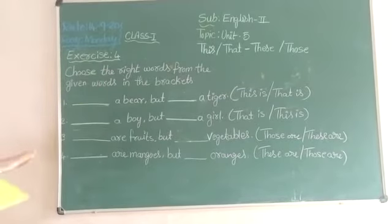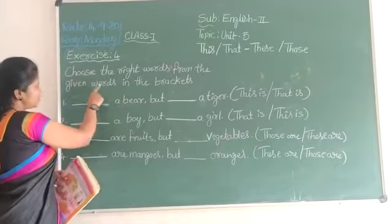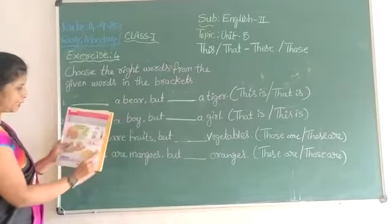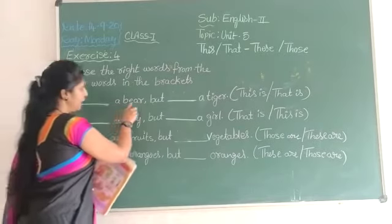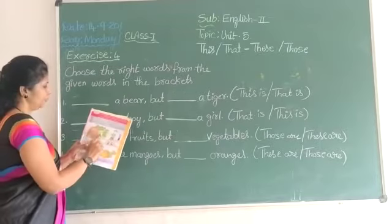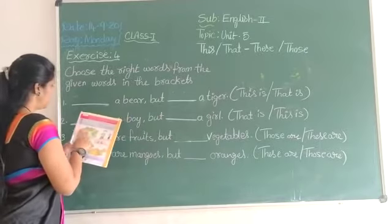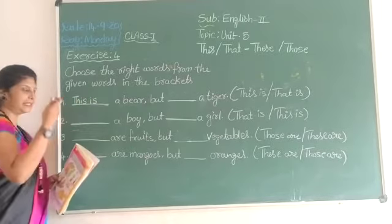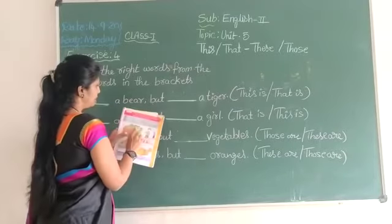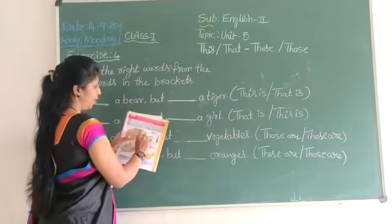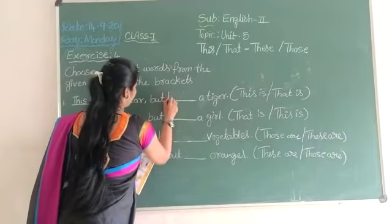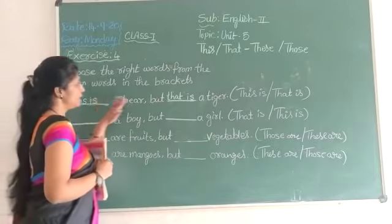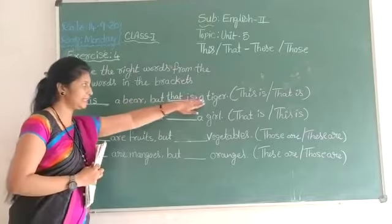Exercise 4. Choose the right words from the given words in the brackets. Look at the picture and you should write: blank, a bar, but blank, a tiger. This is the bar — T-H-I-S, this means near. But that is a tiger. This is the bar, but that is a tiger.